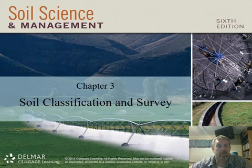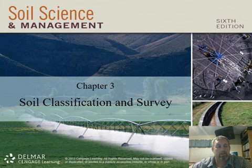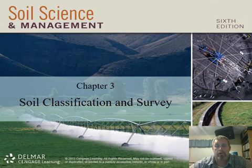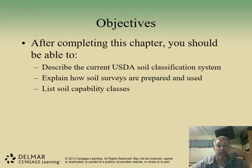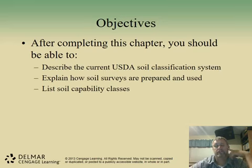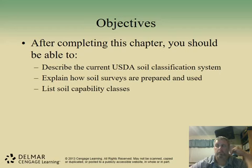Welcome to Chapter 3 of Soil Science and Management. Today we're going to discuss soil classification and surveying soil, understanding the different parts of soil and how we classify different soils for suitability and based upon uses. The objective of this chapter is to understand and describe the USDA soil classification system, how soil surveys are used and prepared, and the land capability classes as defined by the soil conservation standards.